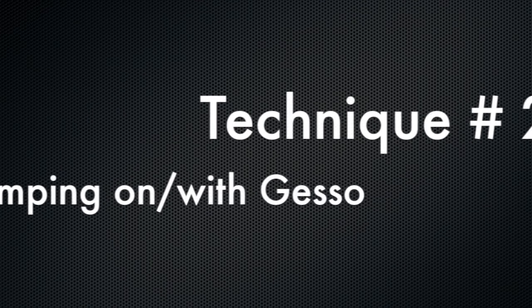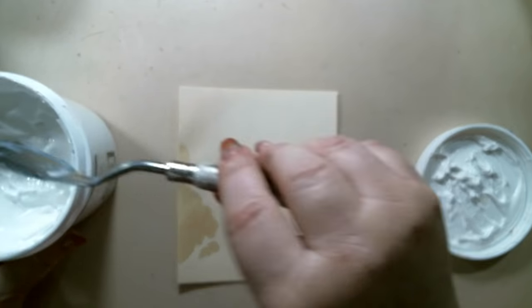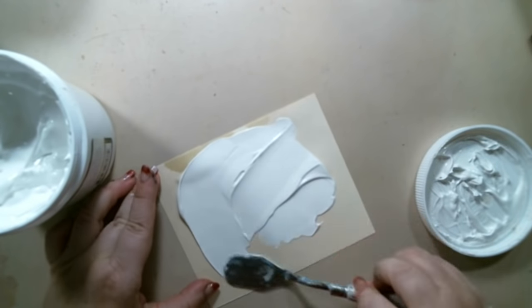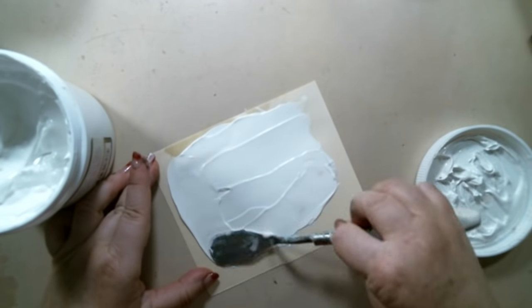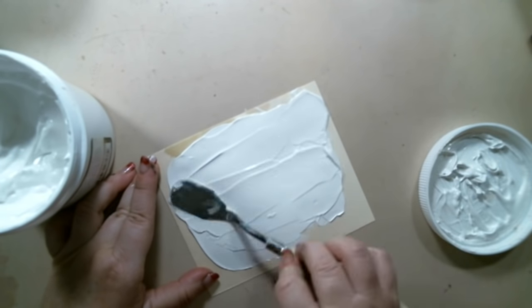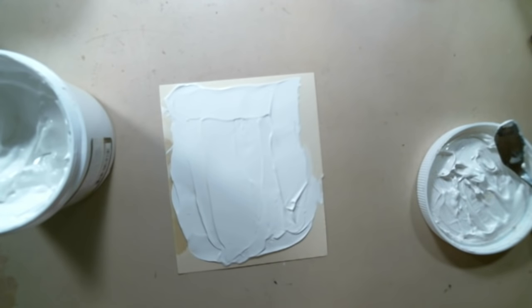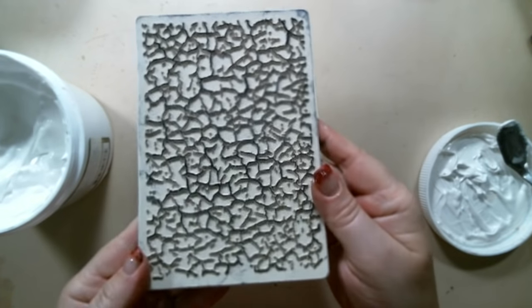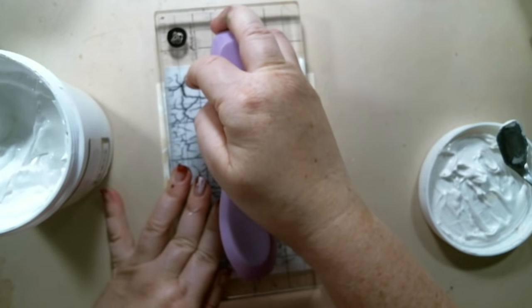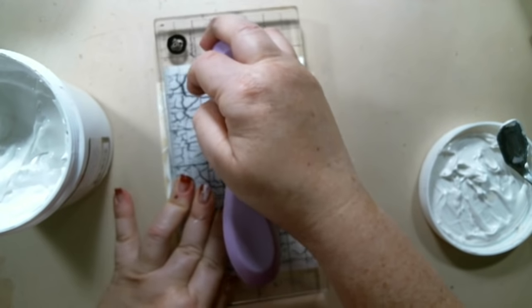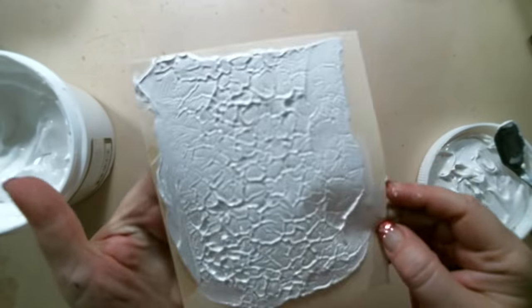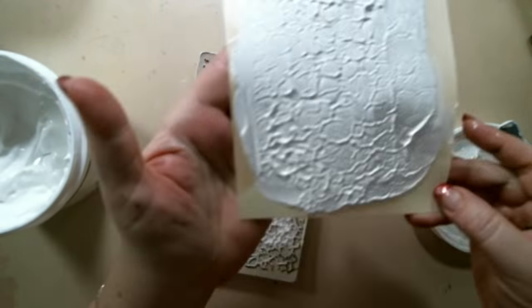Technique number two also involves stamping, but this time I stamped over gesso. So I took one of my crackled stamps and stamped it right into some wet gesso. I pushed into it and then lifted the stamp and it created the crackle texture on the background. Make sure you clean your stamp very well after stamping with gesso. While it was still wet, I grabbed another piece of paper and stamped what was leftover from the gesso onto that paper. I used Prima Finnabear heavy white gesso.